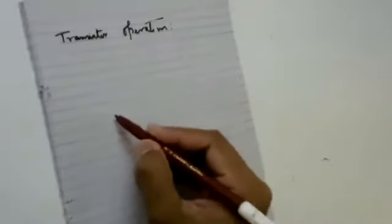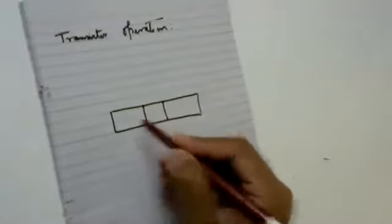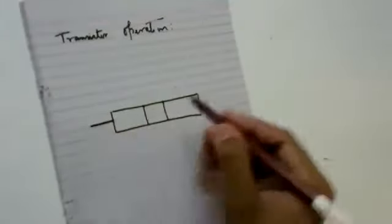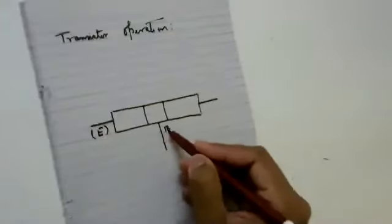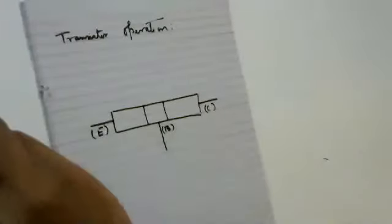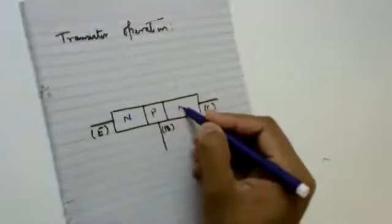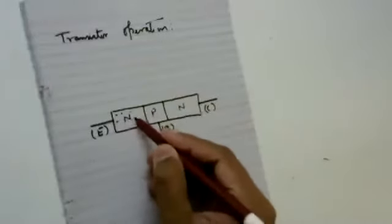Let me consider the structural form of an NPN transistor. This is my block — the width of the collector is higher, the width of the base is less, and the width of the emitter is medium. I'm having three terminals: this is my emitter, this is my base, and this is my collector. This is my N region, P region, and once again an N region. Since this is N-type material, electrons are present.